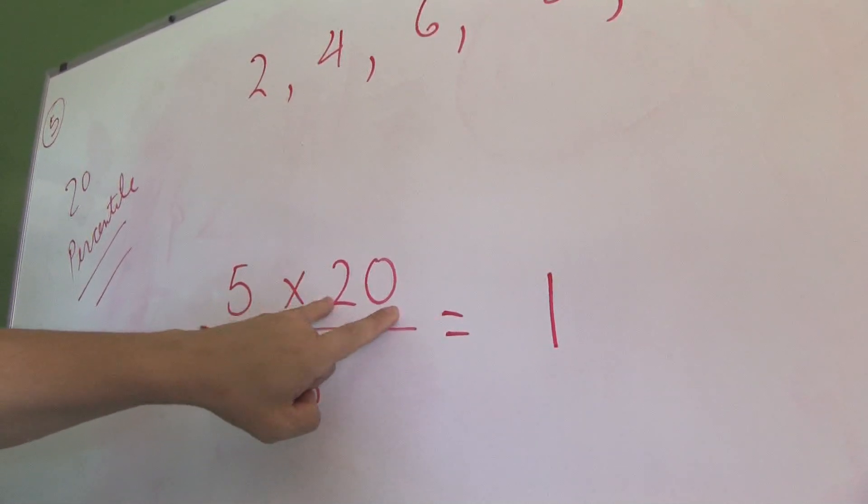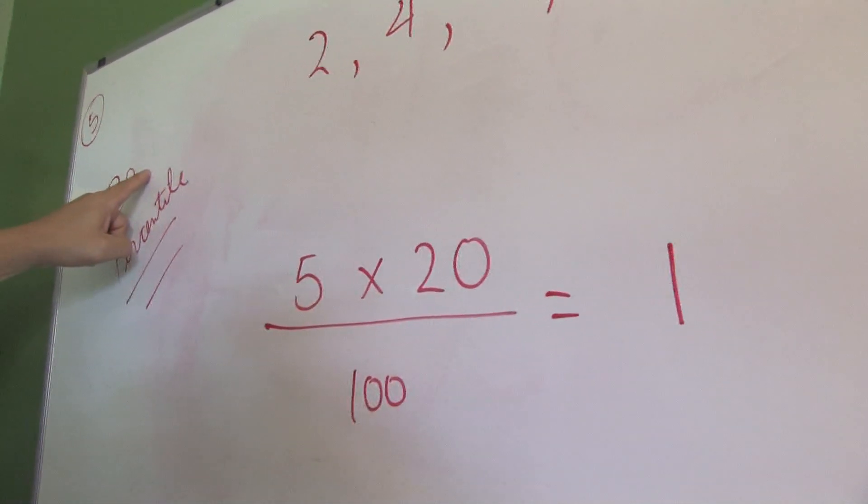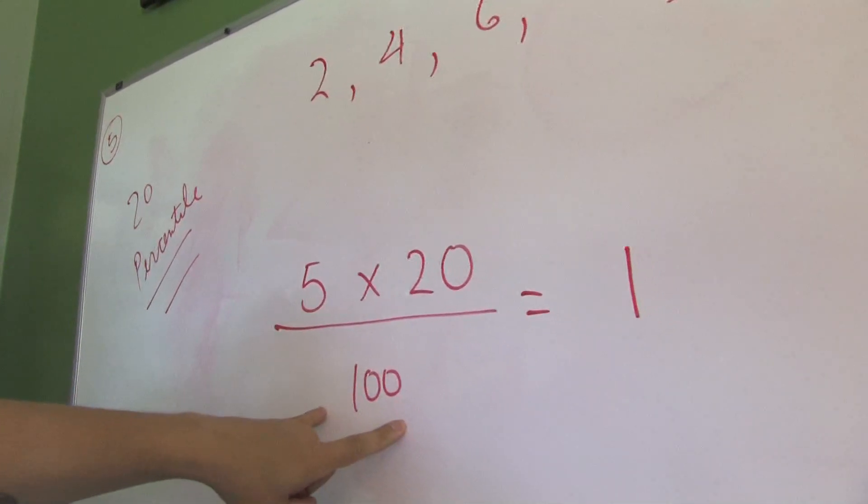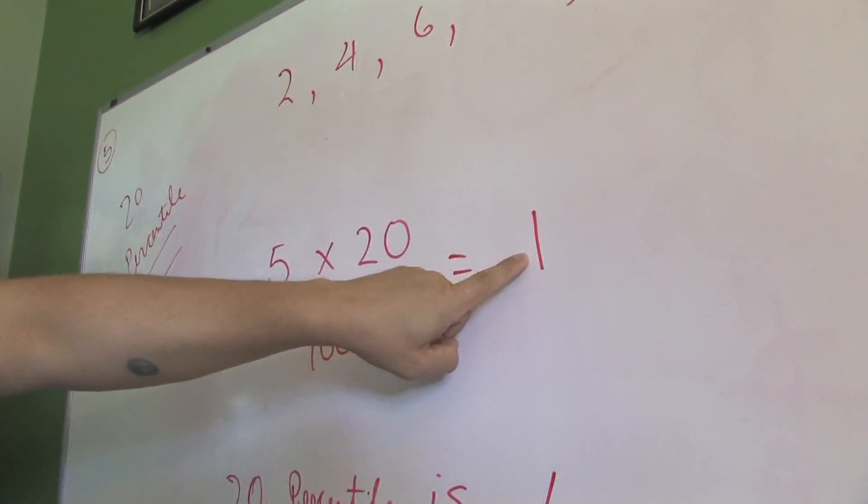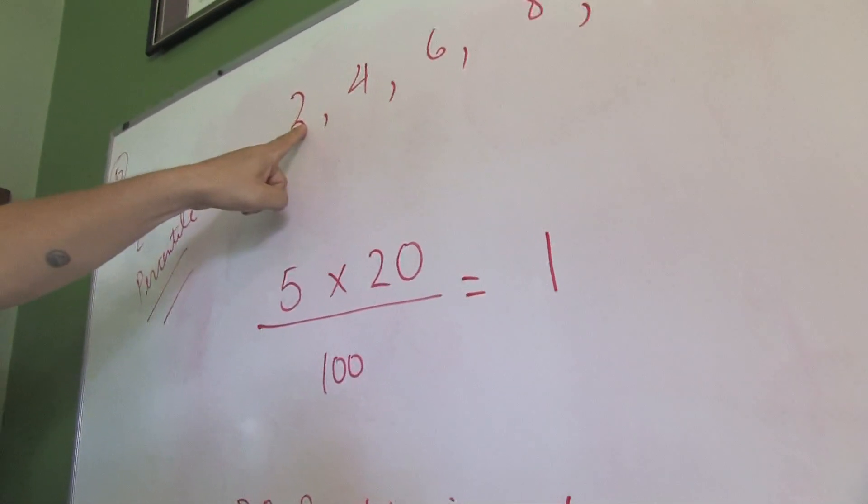You multiply by 20. That 20 comes from the 20th percentile, and you divide by 100. When you do that, you get 1, which signifies the first position.